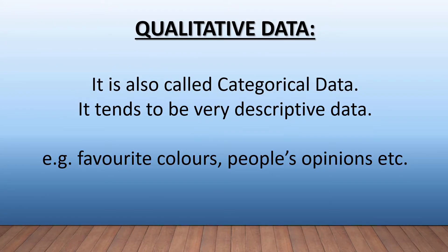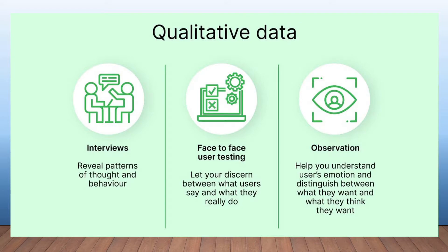With qualitative data, it's also called categorical data, and it tends to be very descriptive. For example, somebody's favorite colors, people's opinions, etc. Another example is qualitative data coming from interviews, which will reveal patterns of thought and behavior.